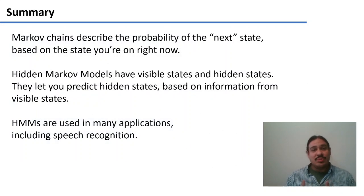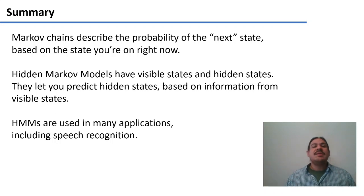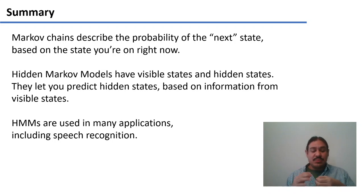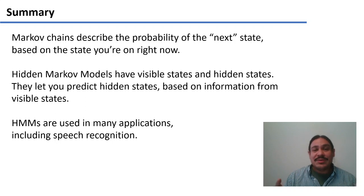In summary, we have two abstractions here. A Markov chain describes the probability of the next state based on the state I am right now and our knowledge of the inputs we're going to get. A hidden Markov model takes this further and has two types of states: visible states and hidden states. These models let you predict hidden states based on the information from the visible states, and they have a lot of applications in signal analysis and speech recognition.